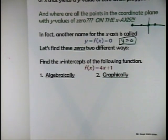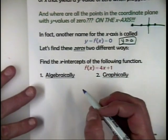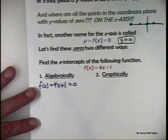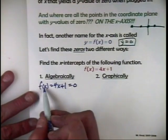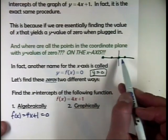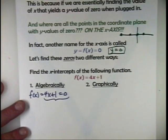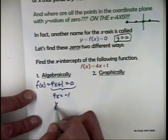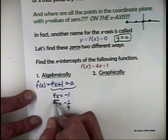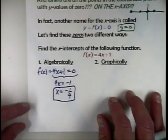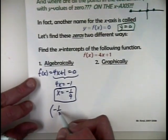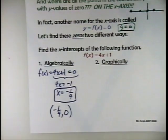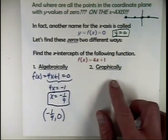To find the zeros algebraically for f of x equals 4x plus 1, set the function equal to 0 — because when y is 0, we are on the x-axis. Subtract 1 from both sides, then divide both sides by 4, and we get x equals negative one-fourth. That is the x-intercept; written as an ordered pair, it's (-1/4, 0), because that's where it lives on the graph.